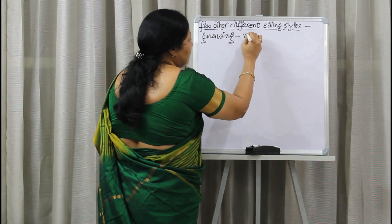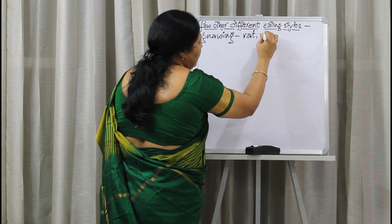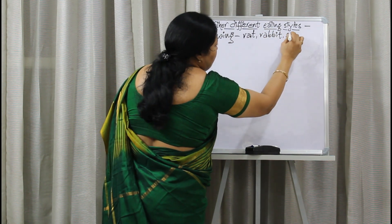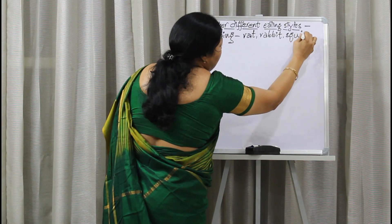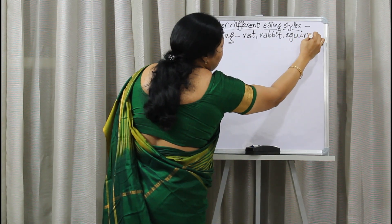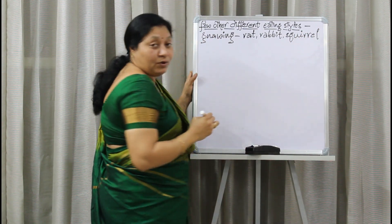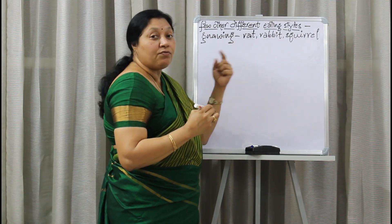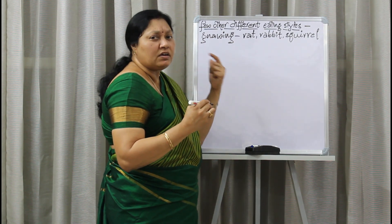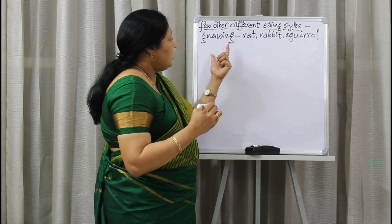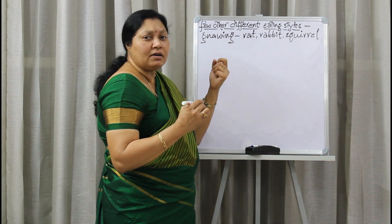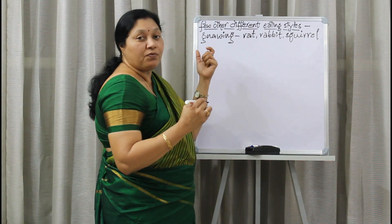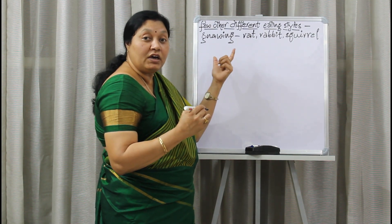Examples of gnawing animals are rats, rabbits, and squirrels. You might have observed these animals eating their food. These animals use their front teeth, which are very sharp, to eat their food by making it into very small pieces. These types of animals are called gnawing animals.